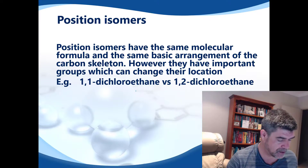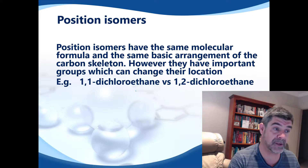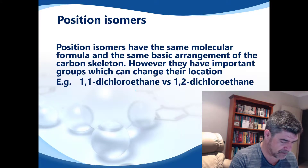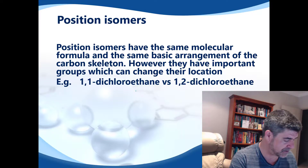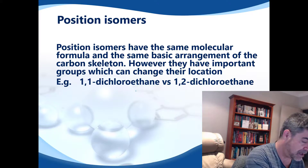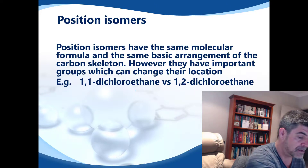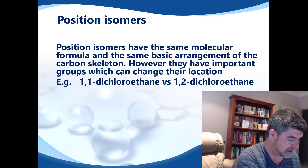Is there another example we can look at to show position isomers? Well, of course there is. I'm going to make a slight modification to one of the compounds I was looking at before. In this case, I'm going to use butene. Here is a molecule of butene.